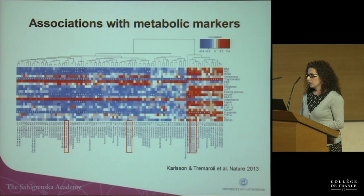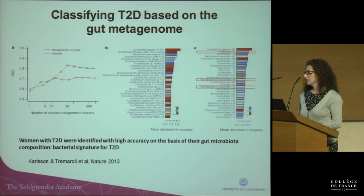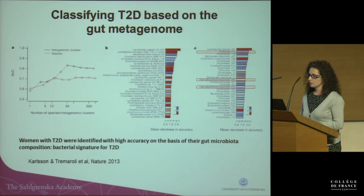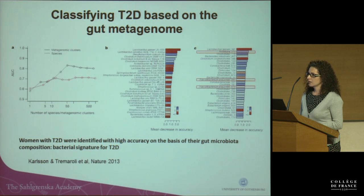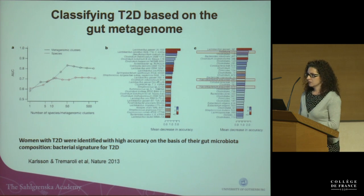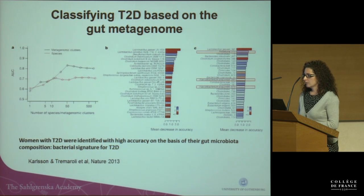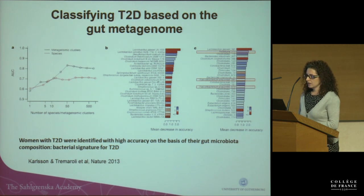We also observed that the function of the gut metagenome is altered in type 2 diabetes. We used the compositional and functional changes to train a mathematical model that was able to classify type 2 diabetes with high accuracy. The most discriminant microbes were Roseburia and Lactobacillus gasseri, but there were also Faecalibacterium prausnitzii species, and so there was a clear bacterial signature discriminating type 2 diabetes subjects.